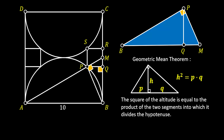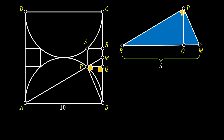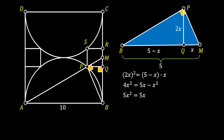So we can use this theorem in our triangle BMP. First, we can see that the line BM represents the half of the side of the square, so it must have the length of 5. For simplicity, let's label the segment QM as X. This means that the remaining segment BQ must have the length of 5 minus X. And since QM is the half of the side of the small square PQRS, this means that PQ is the side of this square, so it must have the length of 2X. Now let's use our Geometric Mean Theorem: the height of 2X squared is equal to the product of segment BQ, which is (5 minus X), and QM, which equals X.